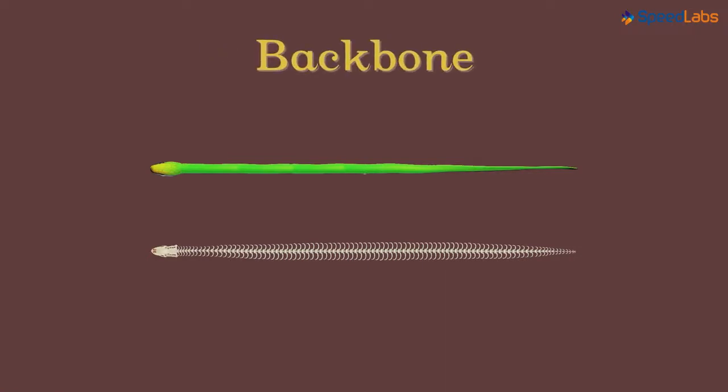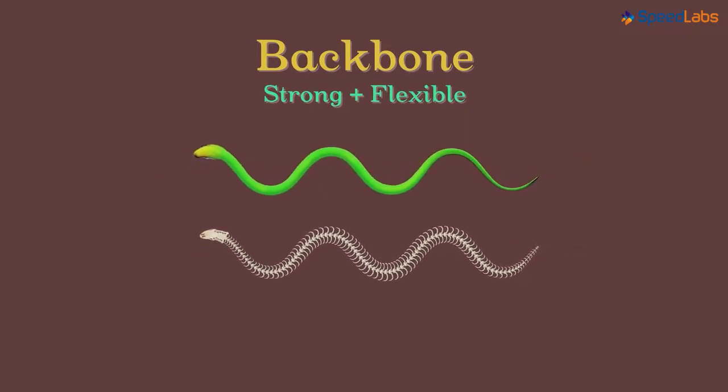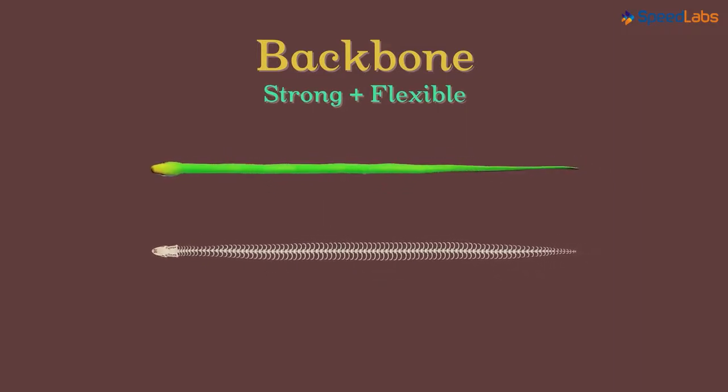The backbone of a snake is extremely strong but at the same time, it's flexible enough to bend efficiently. The backbone is connected to the outer skin with the help of the thin muscles present in between the two.